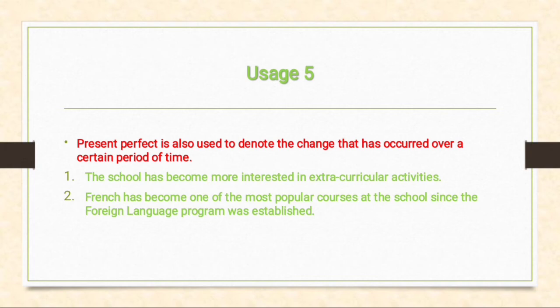Fifth usage: present perfect tense is also used to denote a change that has occurred over a certain period of time. For example: 'The school has become more interested in extracurricular activities.' 'French has become one of the most popular courses at the school since the foreign language program was established.'